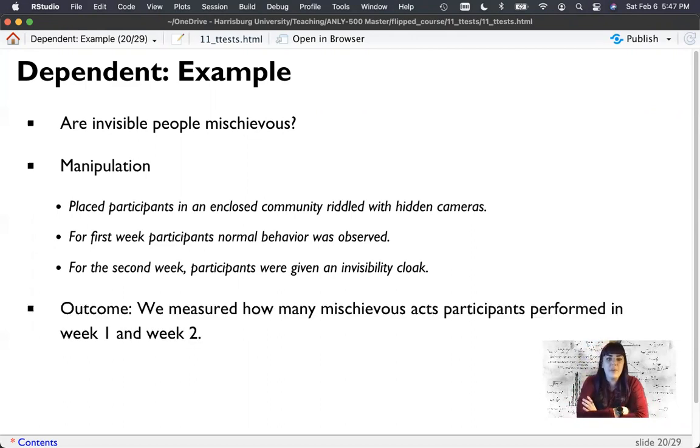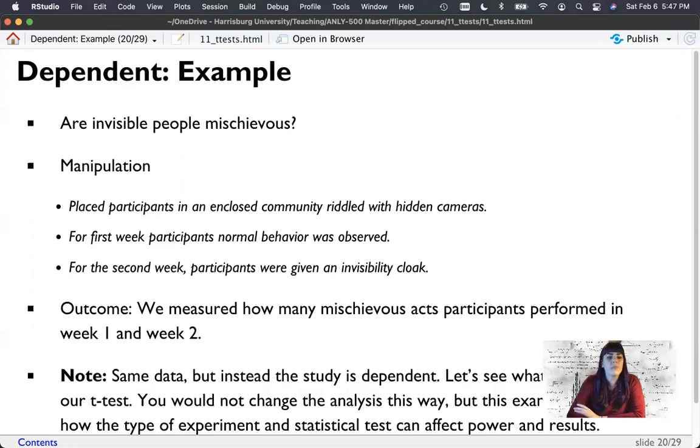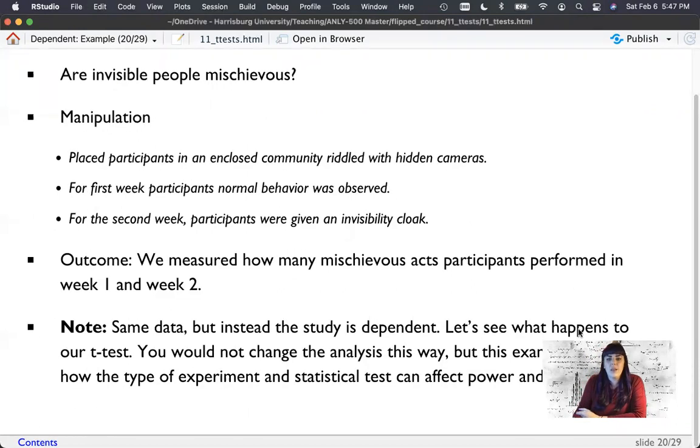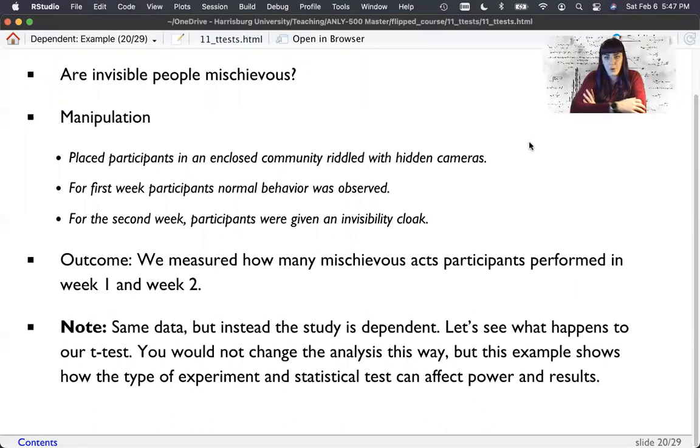And so we measured how many mischievous acts they performed in week one and week two. Now, this is the same data as before, but now is only tested on 12 participants. So the study is dependent. It's not 24 independent people, it's 12 dependent pairs. And let's see what happens to our t-test. You should not do this normally. This is an example to show you how power is affected by the statistical test and the research design.